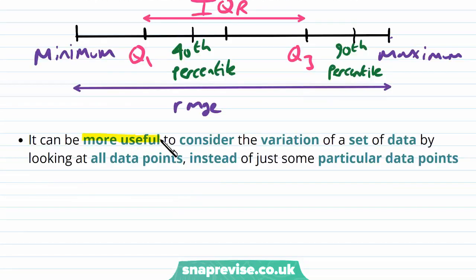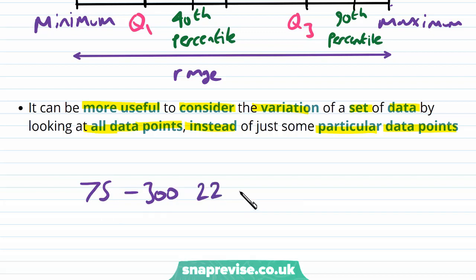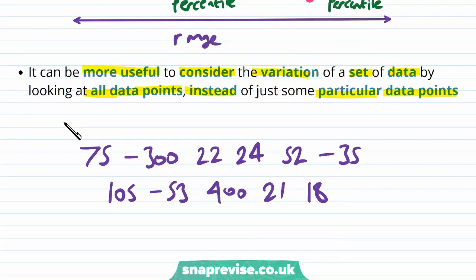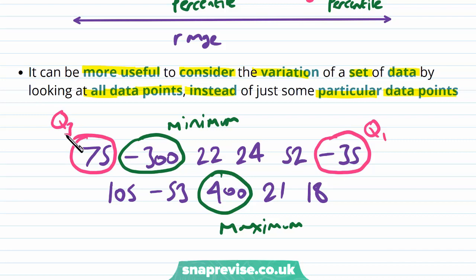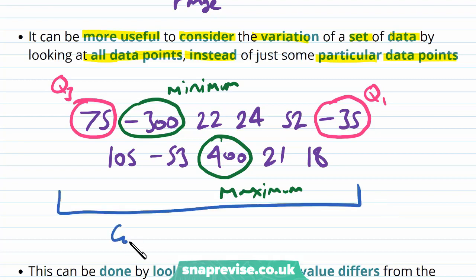It can be more useful to consider the variation of a set of data by looking at all data points instead of just some particular data point. Let's say we have some data: 75, -300, 22, 24, 52, -35, 52, -35, 105, -53, 400, 21, and 18. Then we have -300 as our minimum, 400 as our maximum, -35 as our lower quartile Q1, and 75 as our upper quartile Q3. We can use these to look at the spread of the data, but instead we want a method of finding the spread by considering all of the points.